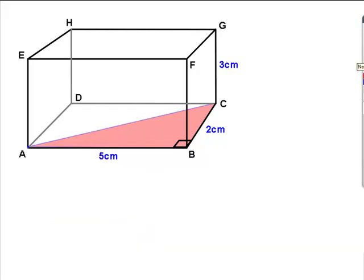Suppose now we want to look at a different line. Let's look at AG, which is the diagonal going through the centre of the cuboid.